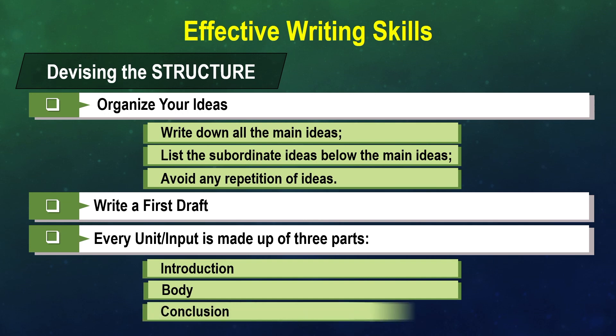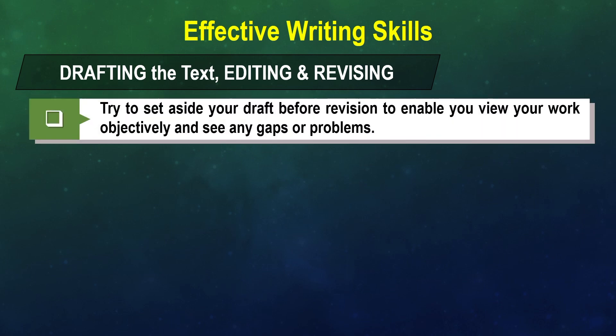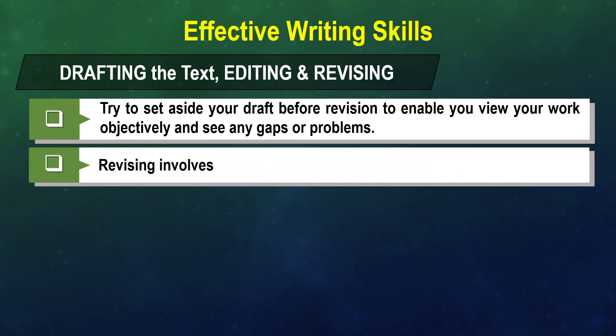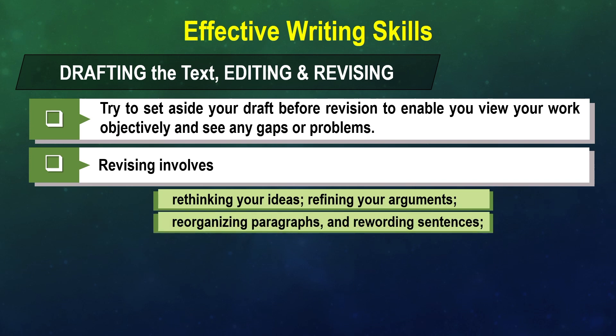A conclusion gives the summary of that particular unit. You then have to draft the text, edit it, and revise it. The best way is to keep it aside before you revise, because it will help you view your work objectively and see any gaps or problems. Revising involves rethinking your ideas, refining your arguments, reorganizing paragraphs, and rewording sentences.